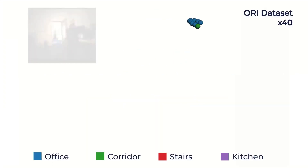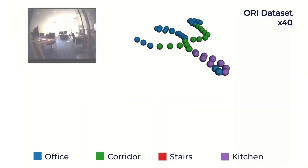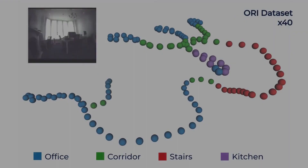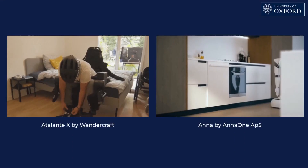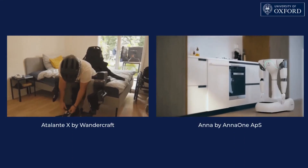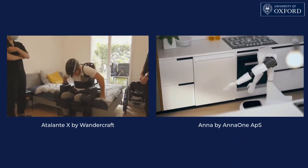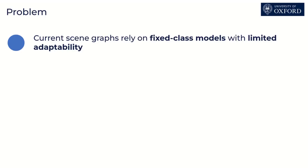We present Lexis, a language-extended indoor SLAM system for real-time scene understanding. Autonomous systems need semantic understanding to interact with their surroundings. Current work, such as 3D scene graphs, rely on fixed-class models, limiting their adaptability.